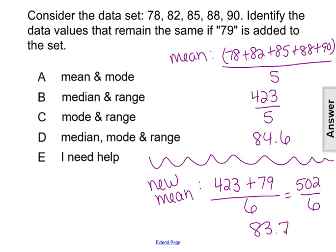Our mean has decreased. So the mean is definitely not the same, which eliminates choice A, since choice A is claiming that the mean is staying the same along with the mode.